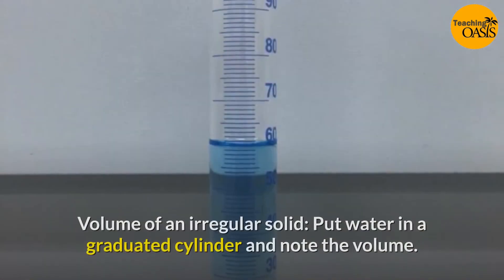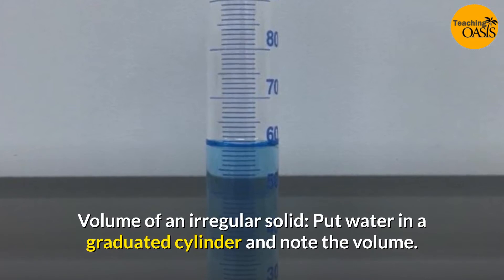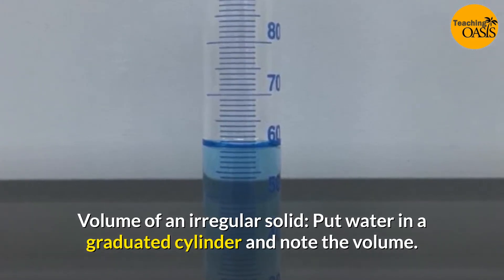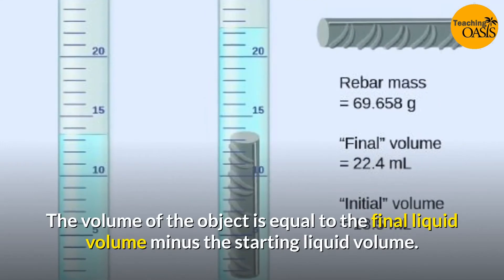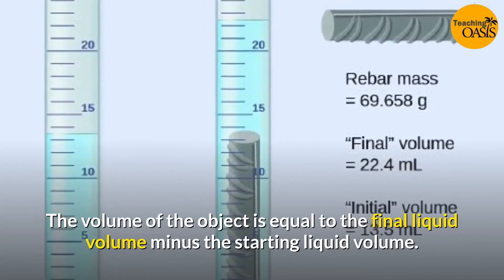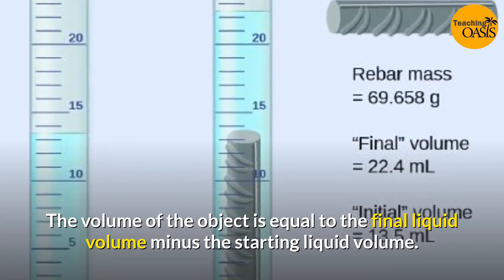Volume of an irregular solid: Put water in a graduated cylinder and note the volume. Add the object and note the new volume. The volume of the object is equal to the final liquid volume minus the starting liquid volume.